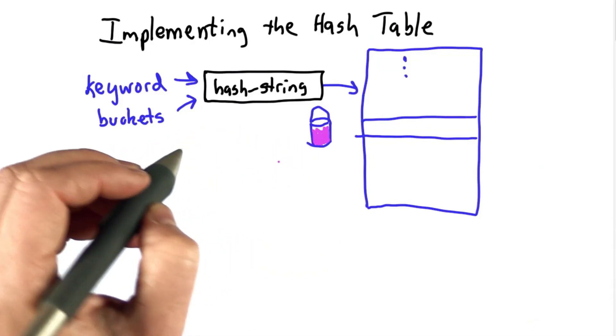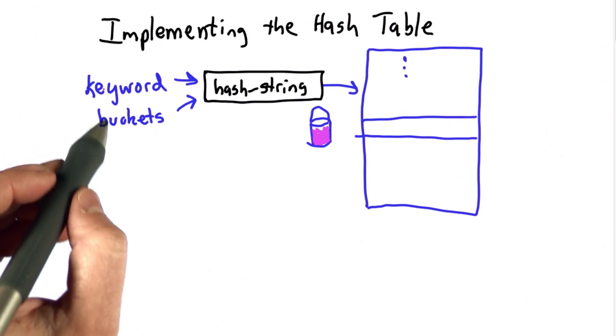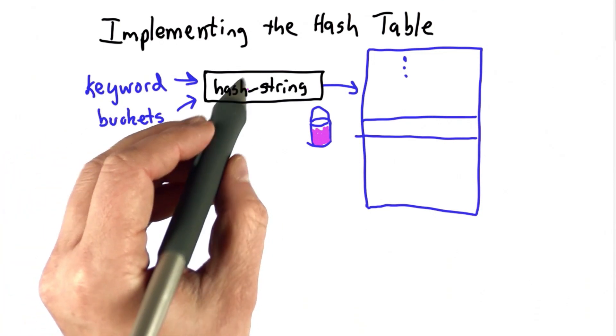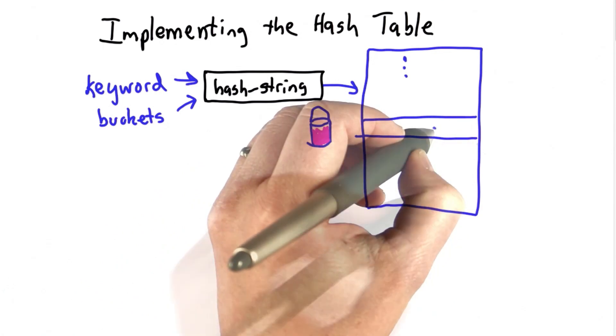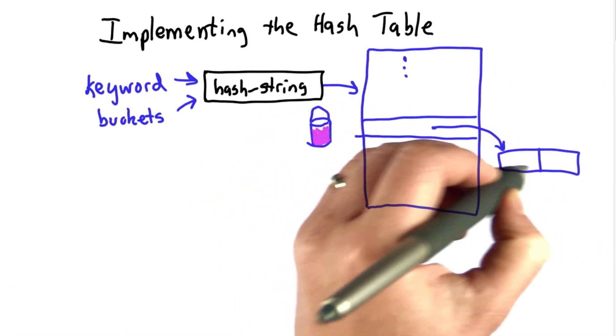I hope everyone understands the main idea behind the hash table now. Our goal is to map a keyword and a number of buckets using a hash string function to a particular bucket, and that bucket will contain all of the keywords that map to that location.